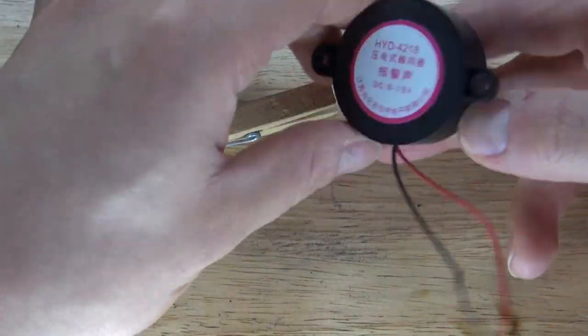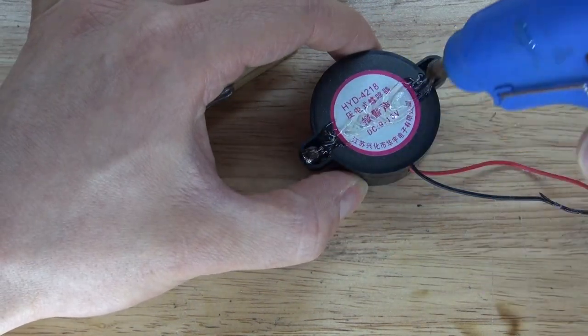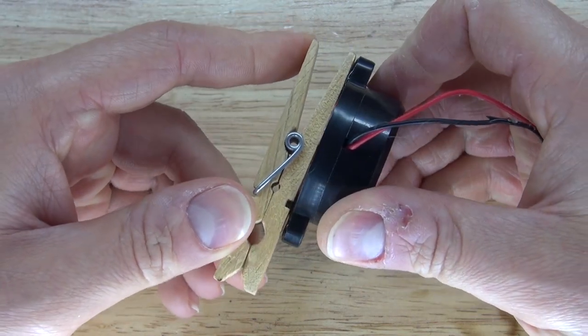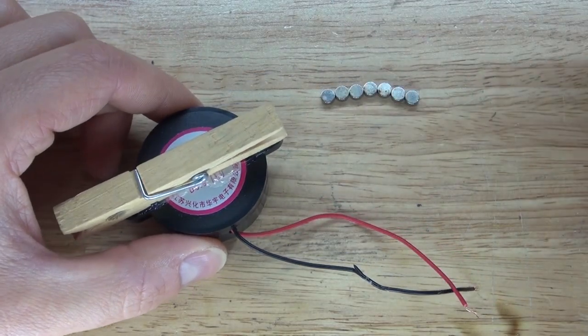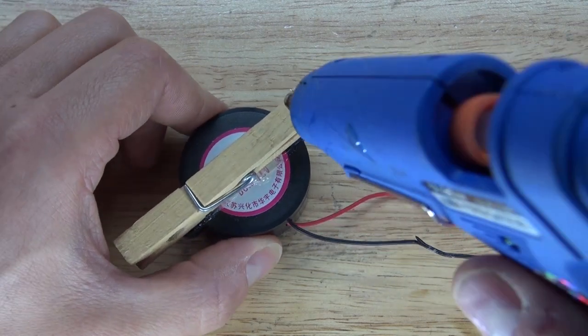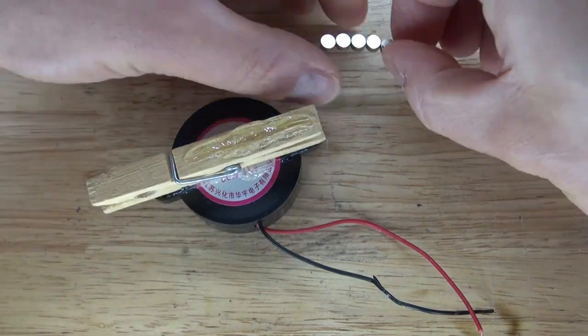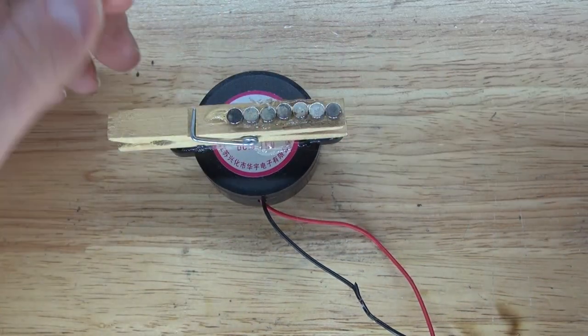First, I'm going to start with this clothespin and buzzer. I'm going to take some hot glue and put some hot glue on the back of the buzzer. Take my clothespin and attach it just like this. Next, I'm going to take these neodymium magnets, get some hot glue, and place it on top of the clothespin. Neodymium magnets on the hot glue just like this. And there, it should look just like that.